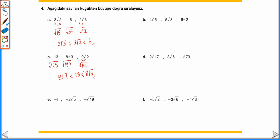−4, −2√5, −√19 sayılarını sıraladığımızda: 4 → √16, eksisi dışarıda: −√16; 2 → √20, eksisi dışarıda: −√20; ve −√19. Negatif sayılarda sıfıra en yakın olan en büyük olacağı için: en küçük −√20 (yani −2√5), sonra −√19, en büyük −√16 (yani −4) olarak bulunur.